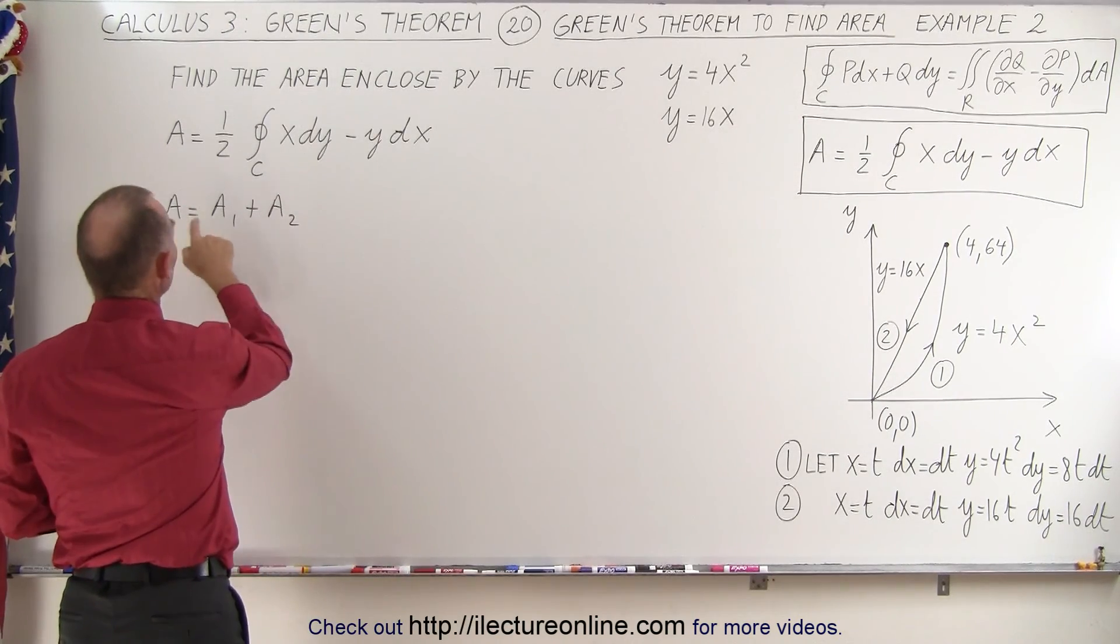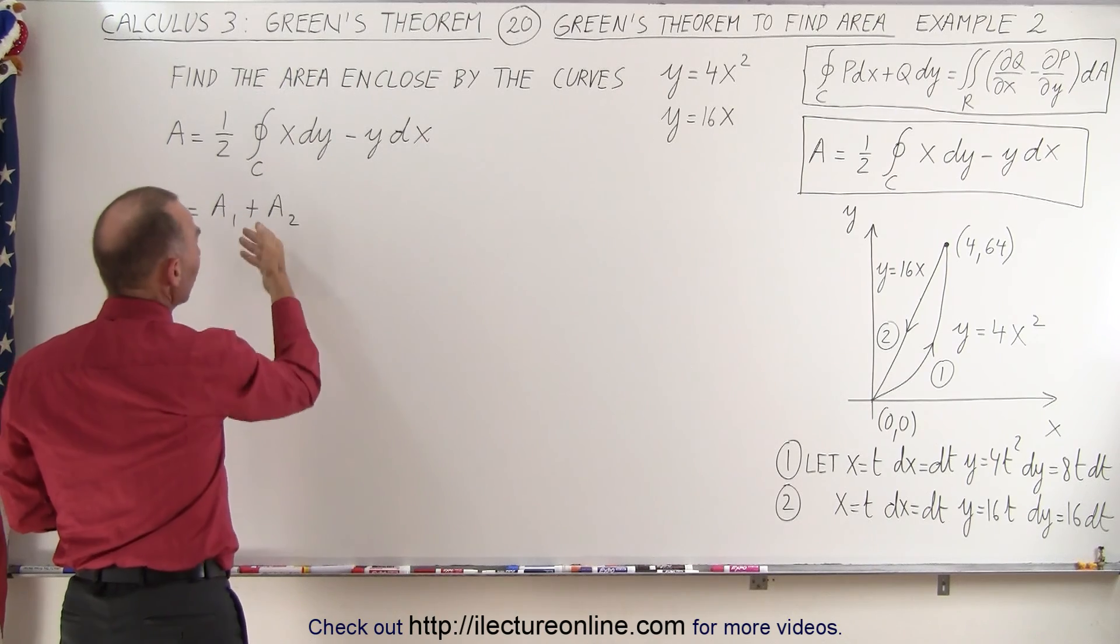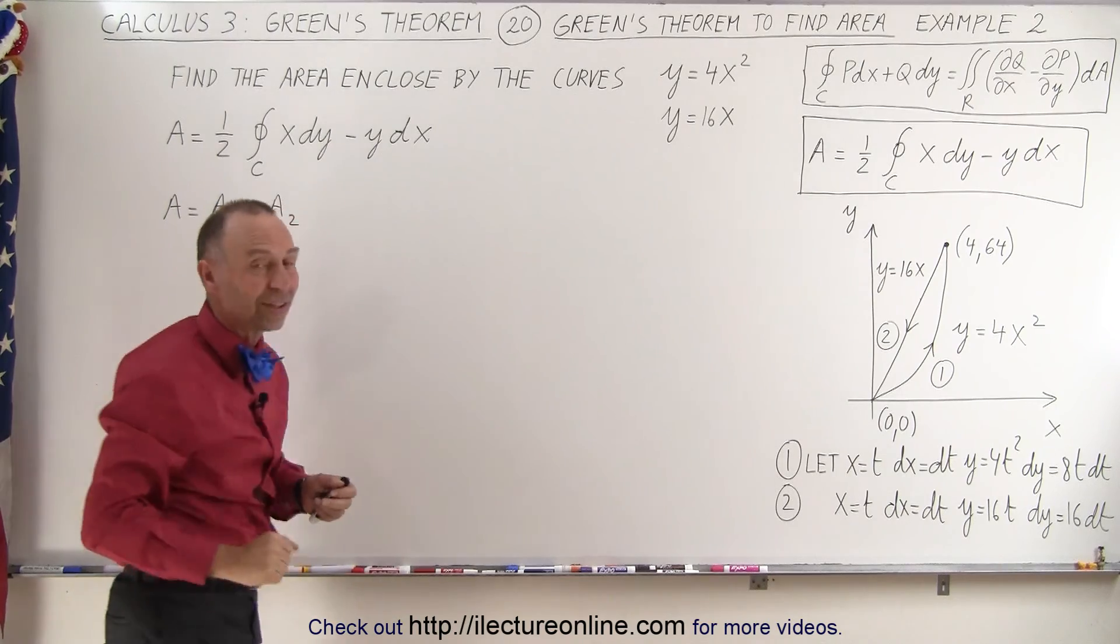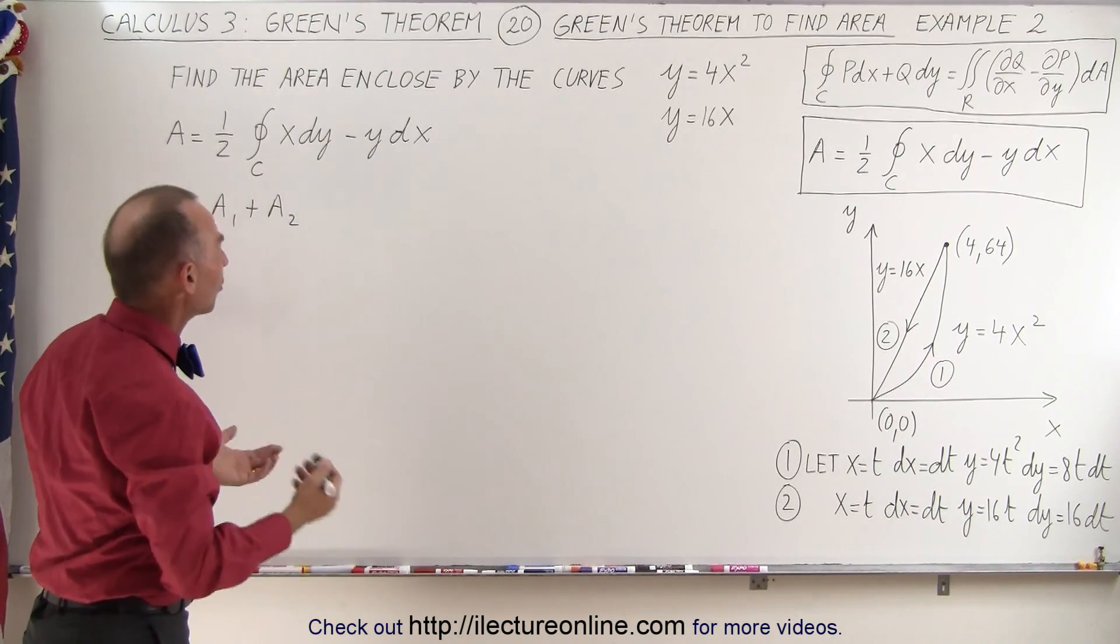The total area enclosed is going to be the sum of the two integrals when we integrate along the y equals 4x square curve, and then along the y equals 16x line. So let's go ahead and do that.